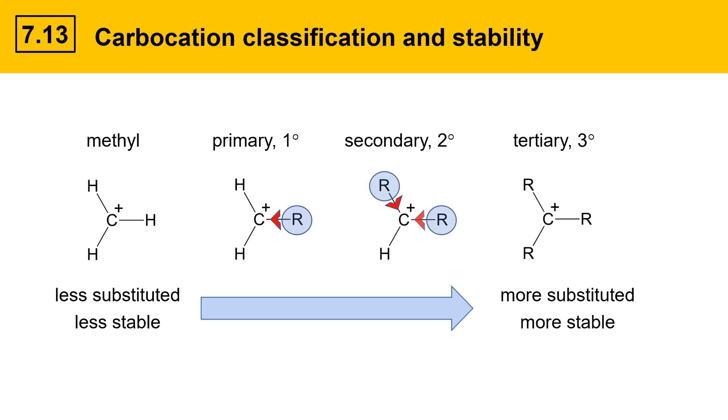With a secondary carbocation there are two of these stabilizing interactions and with a tertiary carbocation there are three. That explains why tertiary carbocations are more stable than secondary, which are more stable than primary, which are more stable than methyl.